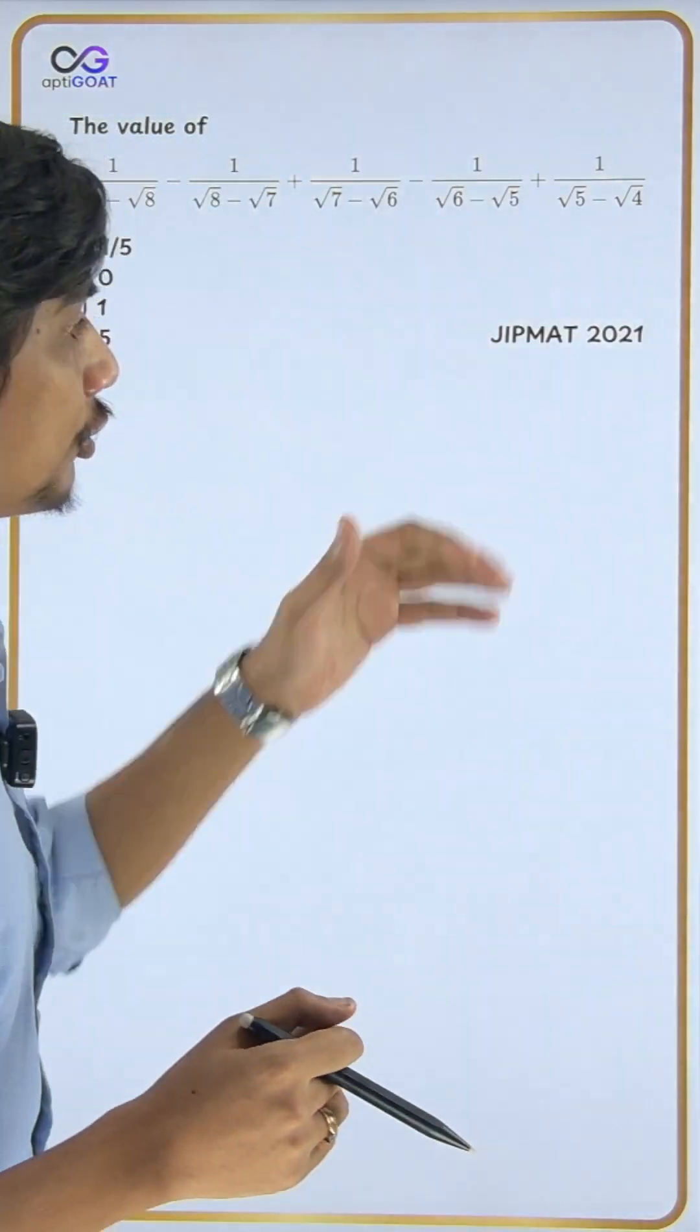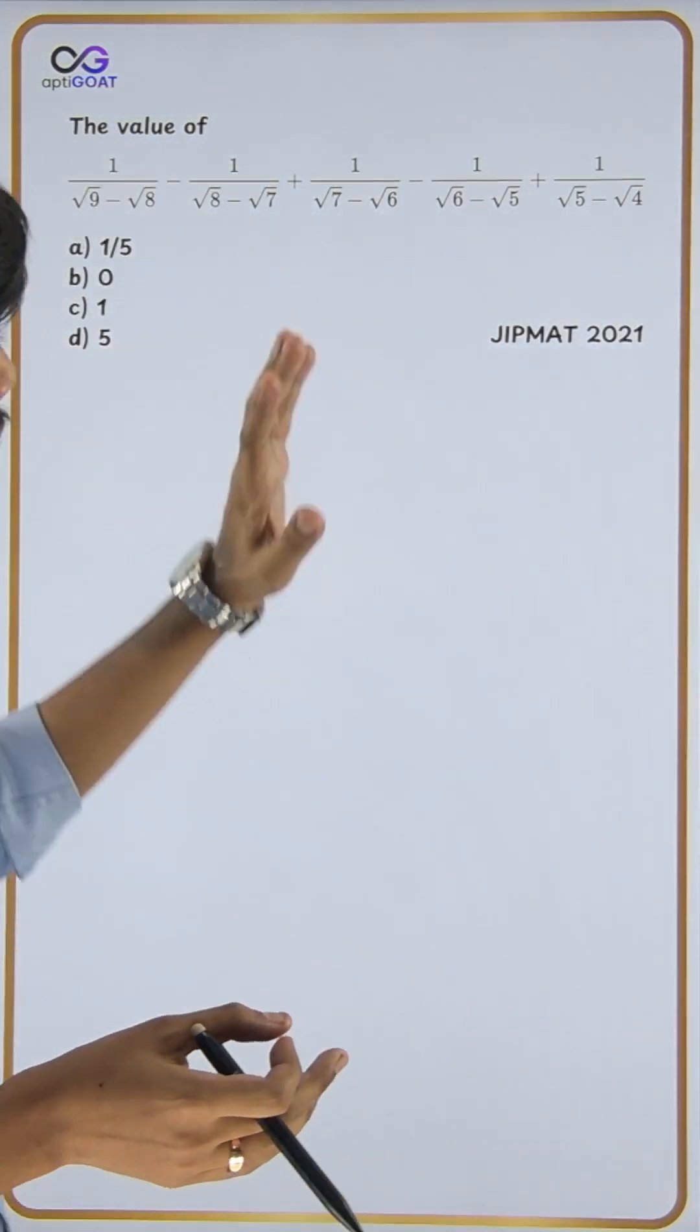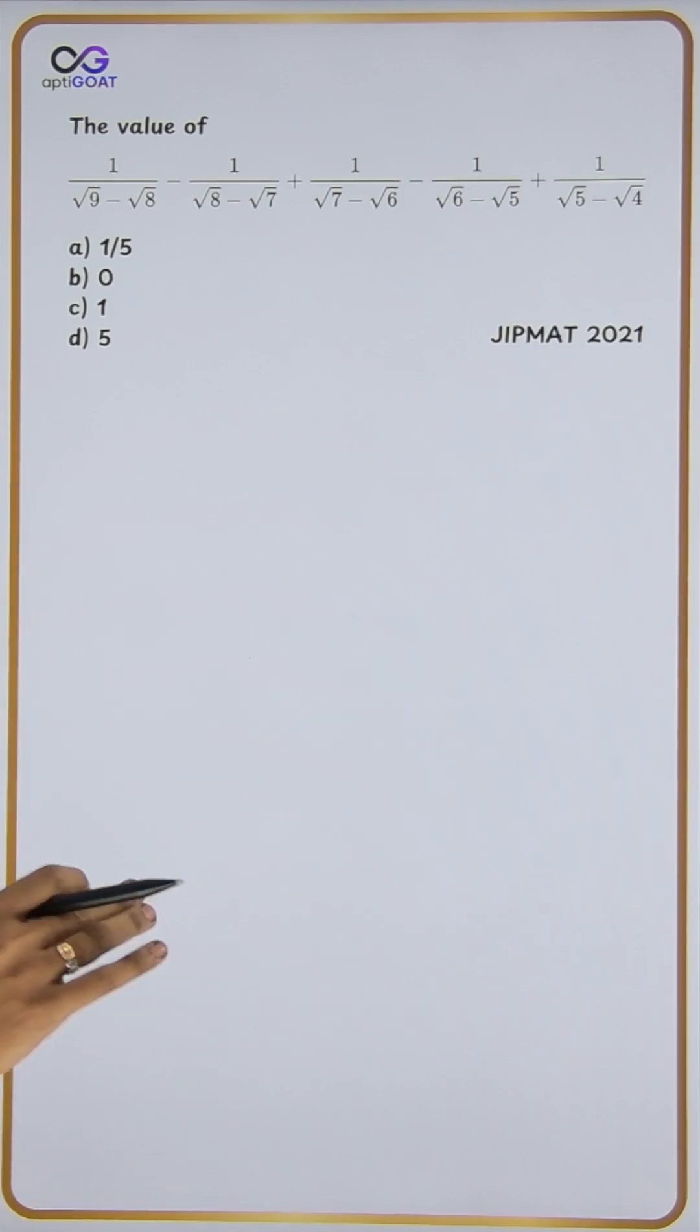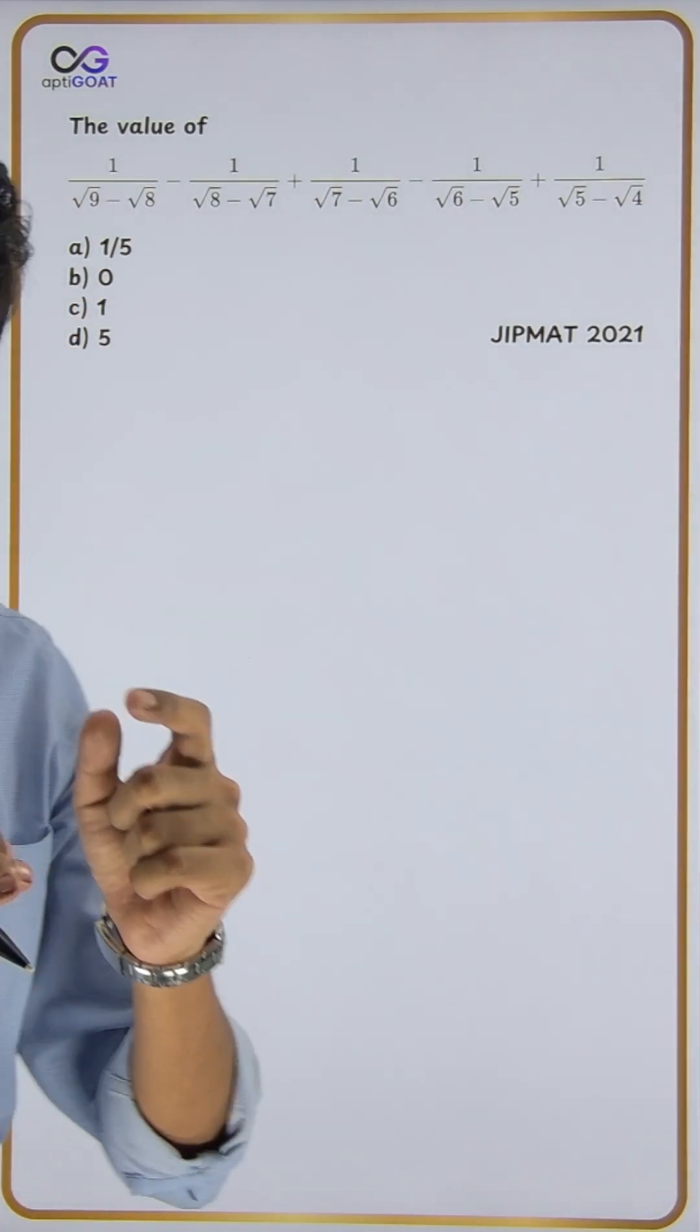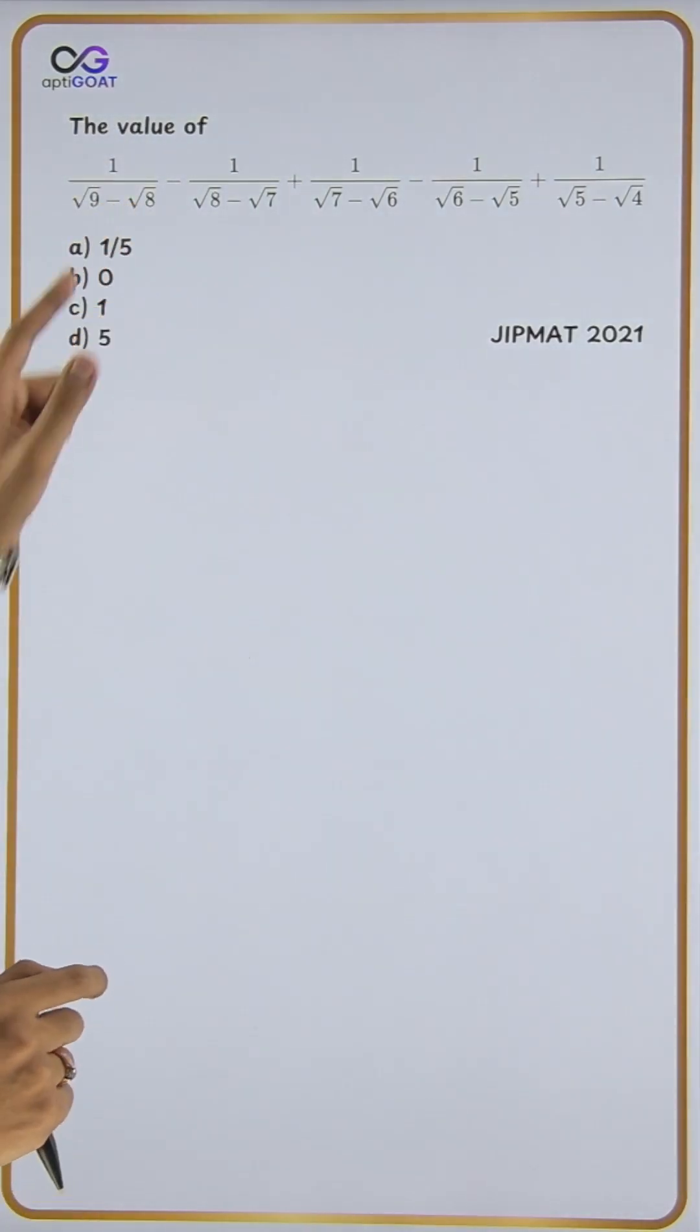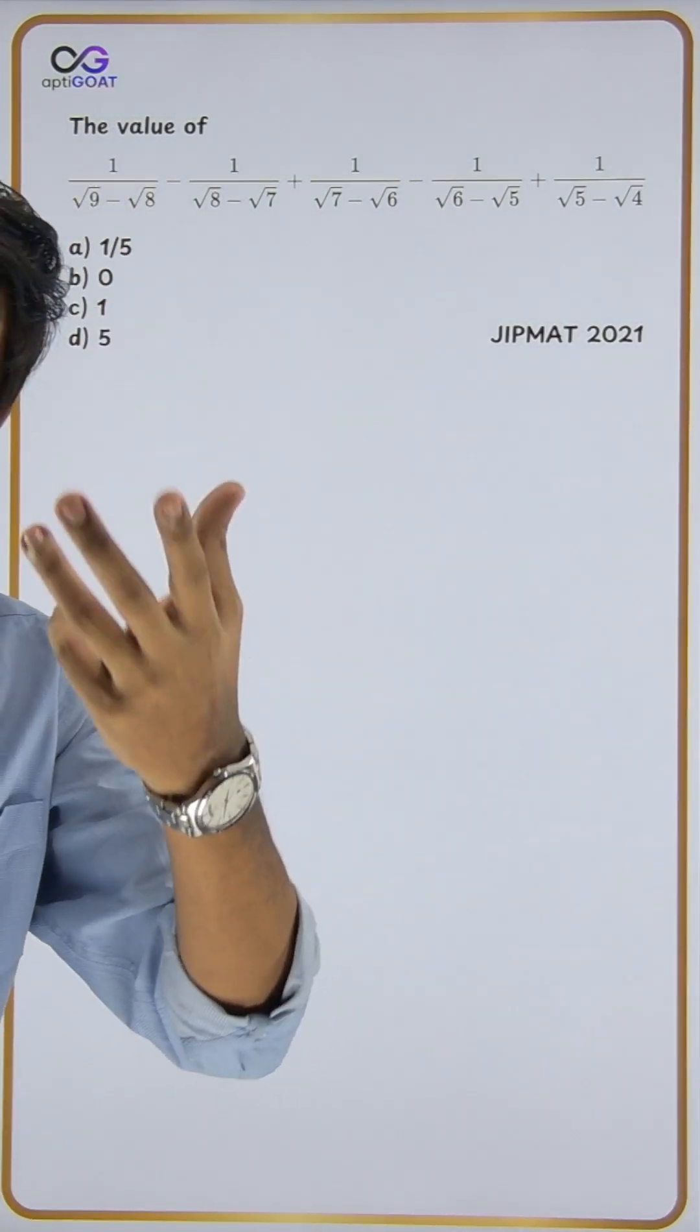Hello everyone, let's solve this question from JIPMAT 2021. The question is on surds. To rationalize, we look at the difference between roots like root 9 and root 8. We will rationalize using the a² - b² formula. We will not write the full steps out.